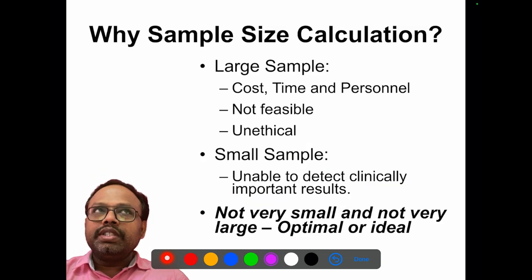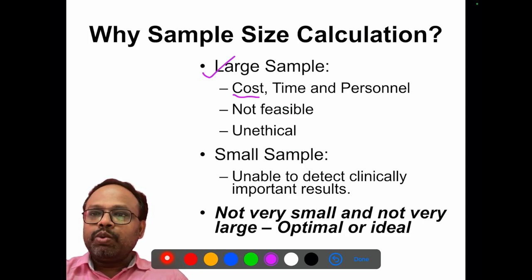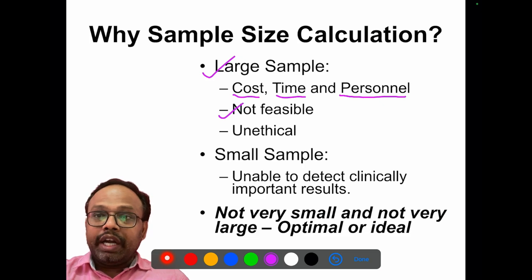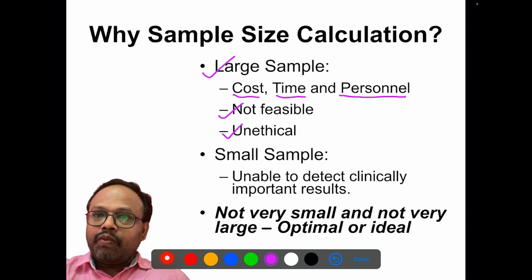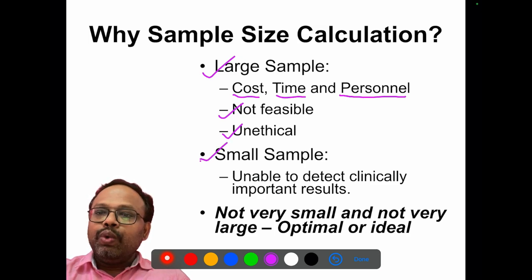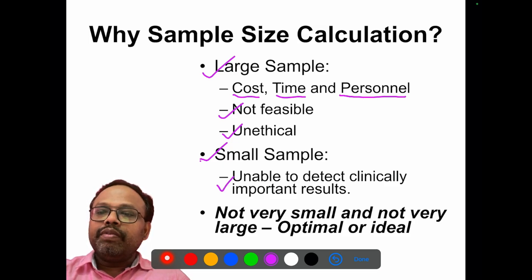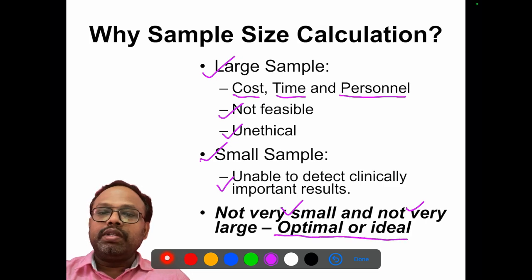Why is sample size calculation needed? If we use a larger sample size, we need a large amount of money, more time, and more manpower. It may not be feasible, and it is also unethical to do such large studies when you can get results with a smaller number. On the other hand, if you go too small, you will be unable to detect what you are supposed to detect. So what you need is neither very small nor very large — an optimal or ideal sample size is required.